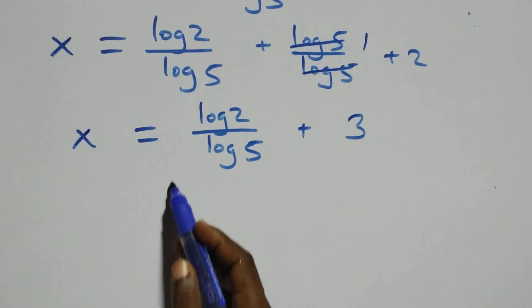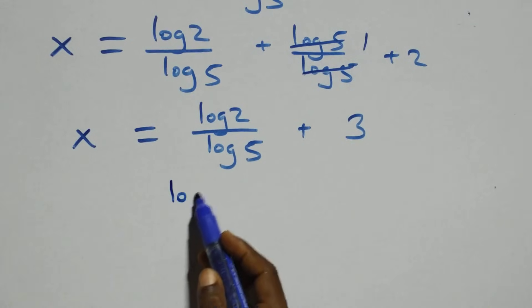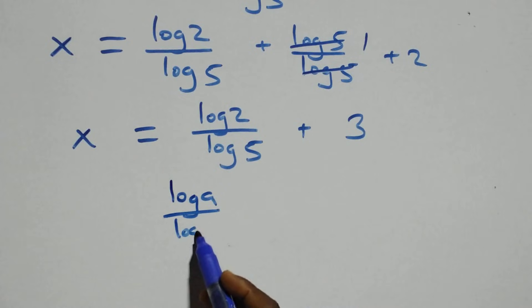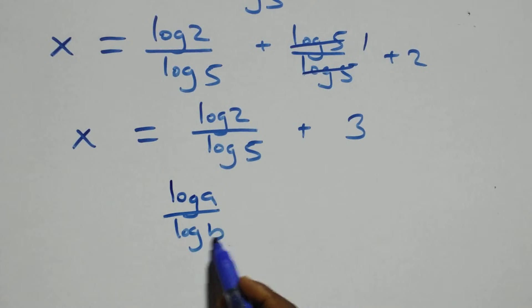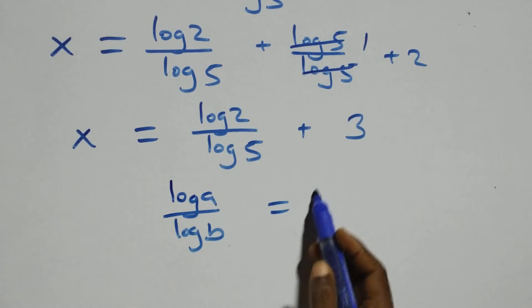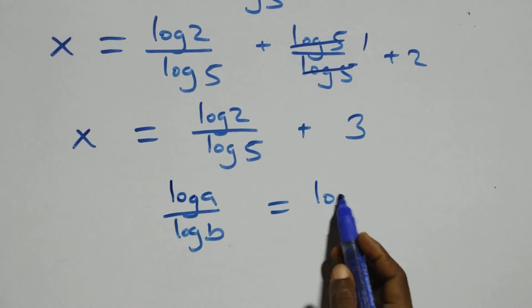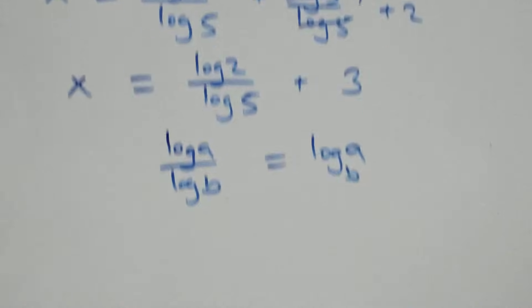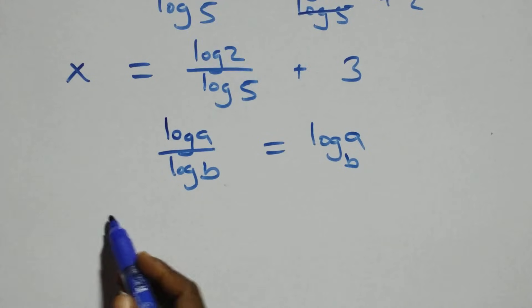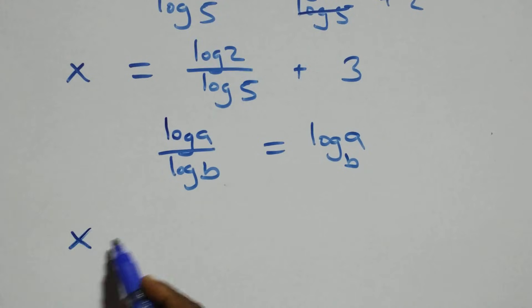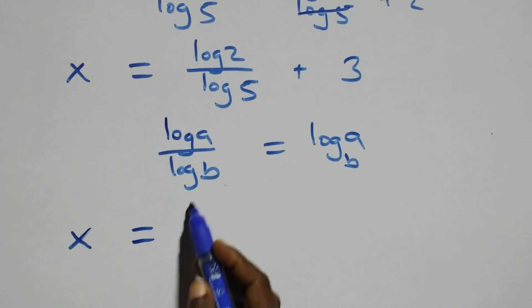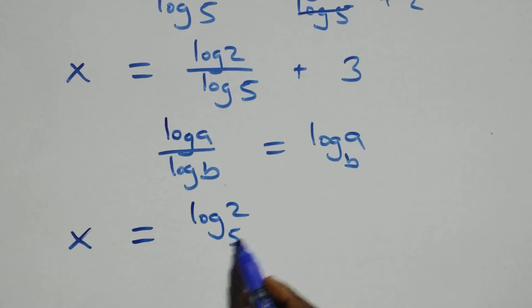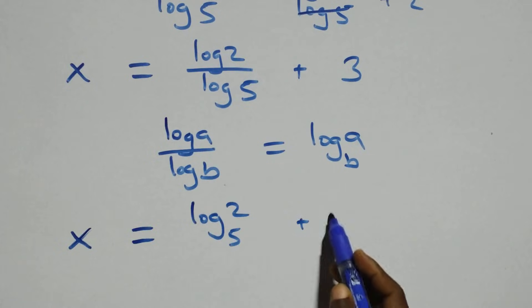We apply the change of base formula: log a over log b equals log a to base b. Therefore, x equals log 2 to base 5 plus 3.